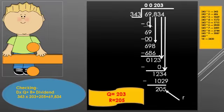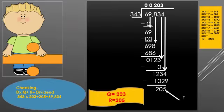Now we will start the division. The first step: whenever you start the division, look at the number on the extreme left side of the dividend. The dividend is 69,834, so the leftmost digit is 6. Since 6 is smaller than 343, when the number is smaller than the divisor we put 0 as the quotient. We write 343 into 0 equals 0.